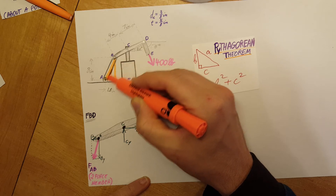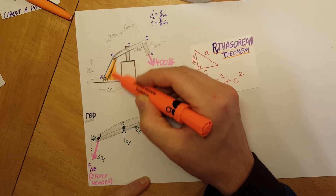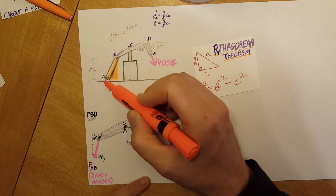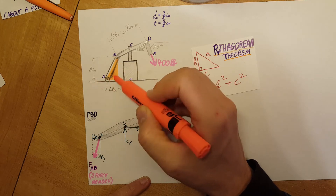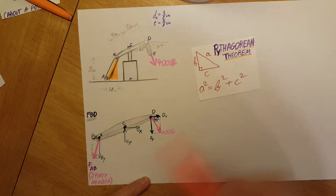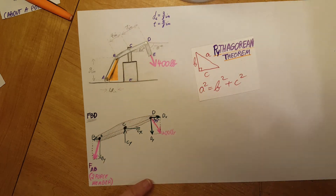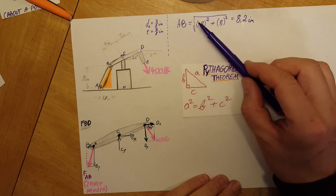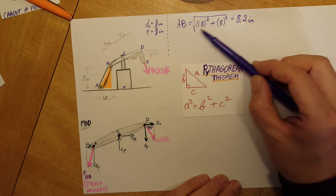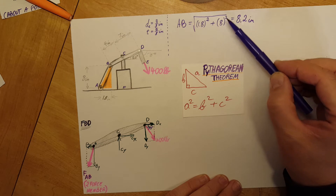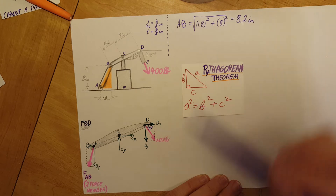First, let's use this triangle to calculate the length of AB. We know both legs of the right triangle, and using the hypotenuse we calculate: AB equals the square root of one side squared plus the other side squared, which equals 8.2 inches.